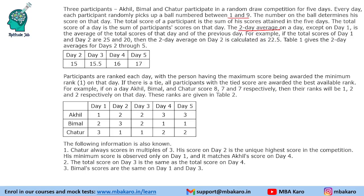So, two-day average means the total score of that day and of the previous day. For example, if the total scores on day one and day two are 25 and 20, then the two-day average on day two is calculated as 22.5. Table one gives the two-day averages for day two through five. Just to understand this table: day one plus day two average is 15, so the total will be 30.